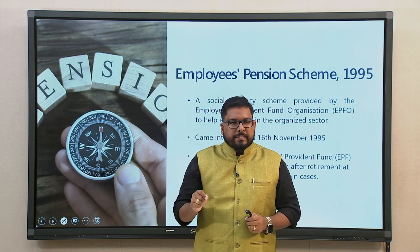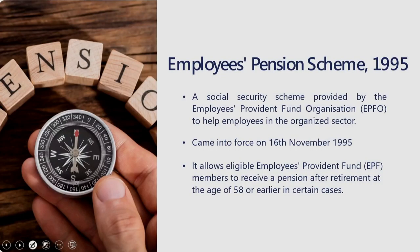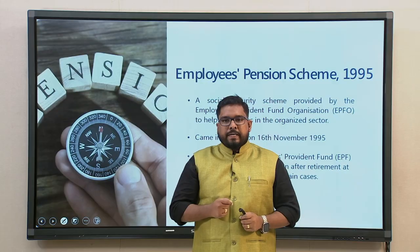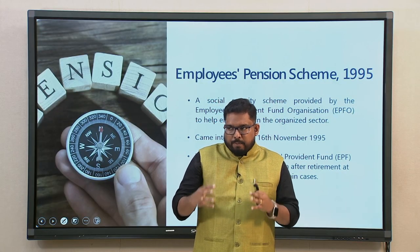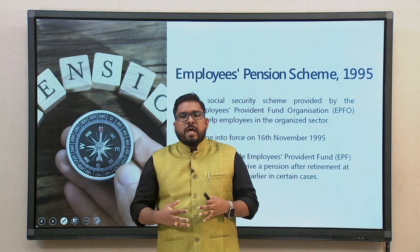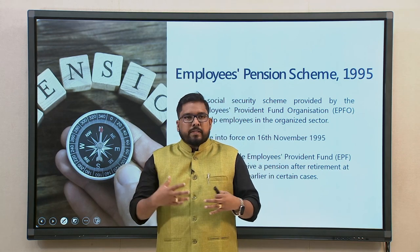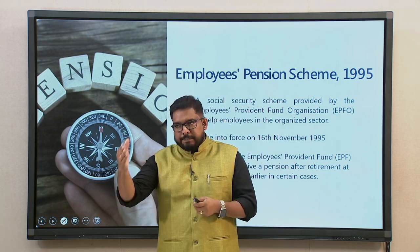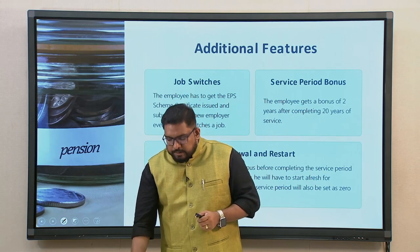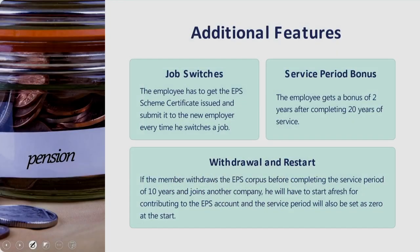The EPS allows EPF members to receive a pension after retirement at the age of 58, and in other particular cases as specified in the Act. Now let us look into some additional features — specifically what happens when you switch jobs, what happens with withdrawal mechanisms, and what happens when there are cases of withdrawal and restart. Let us look into that in greater detail.